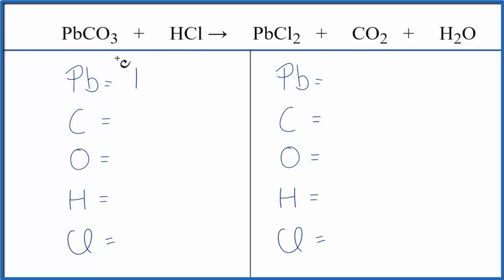We have one Pb, one carbon, three oxygens, one hydrogen, and one chlorine.